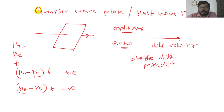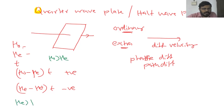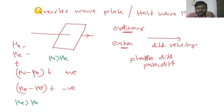If the thickness is such that the path difference is λ/4, then we have the crystal acting as a quarter wave plate.